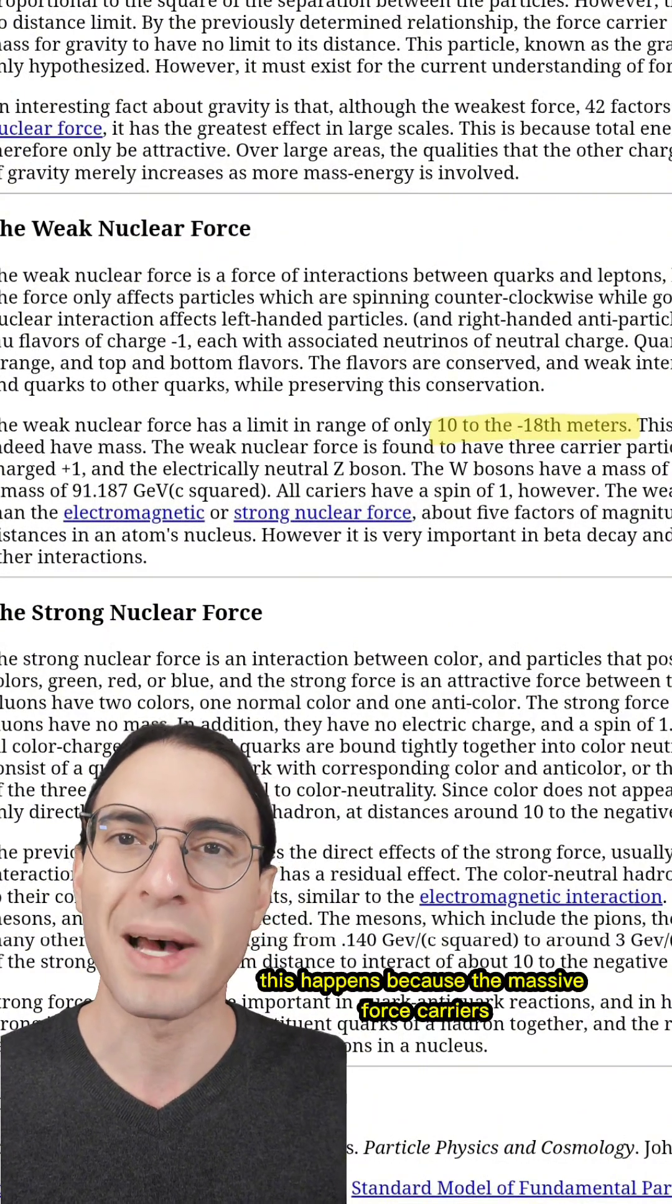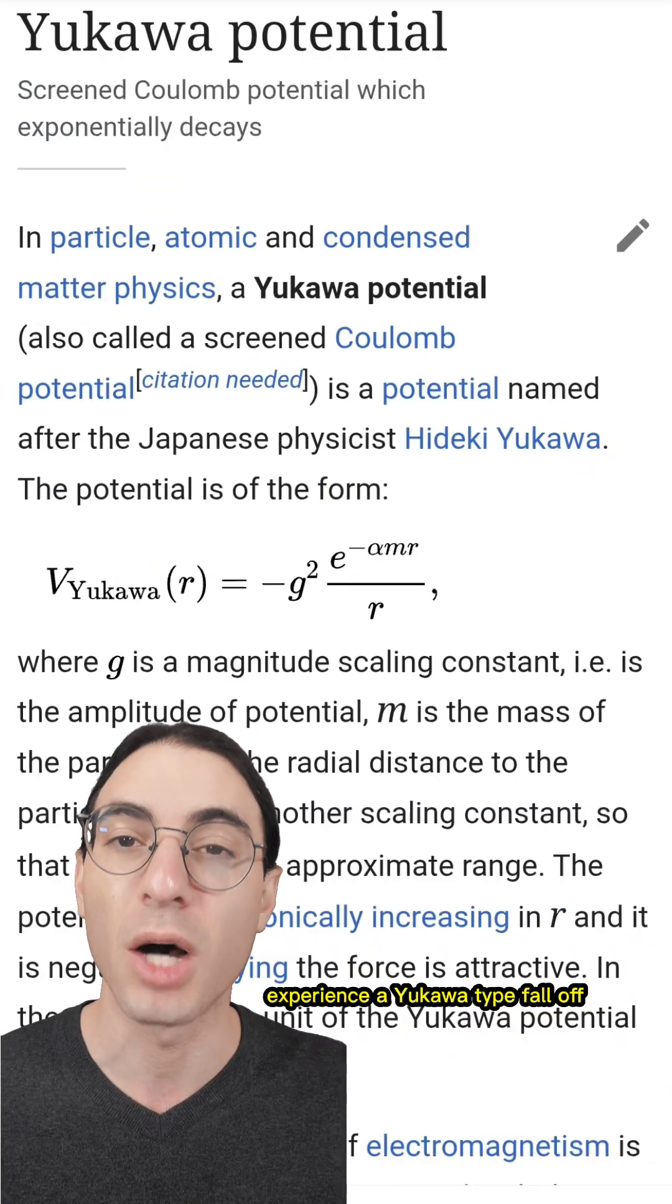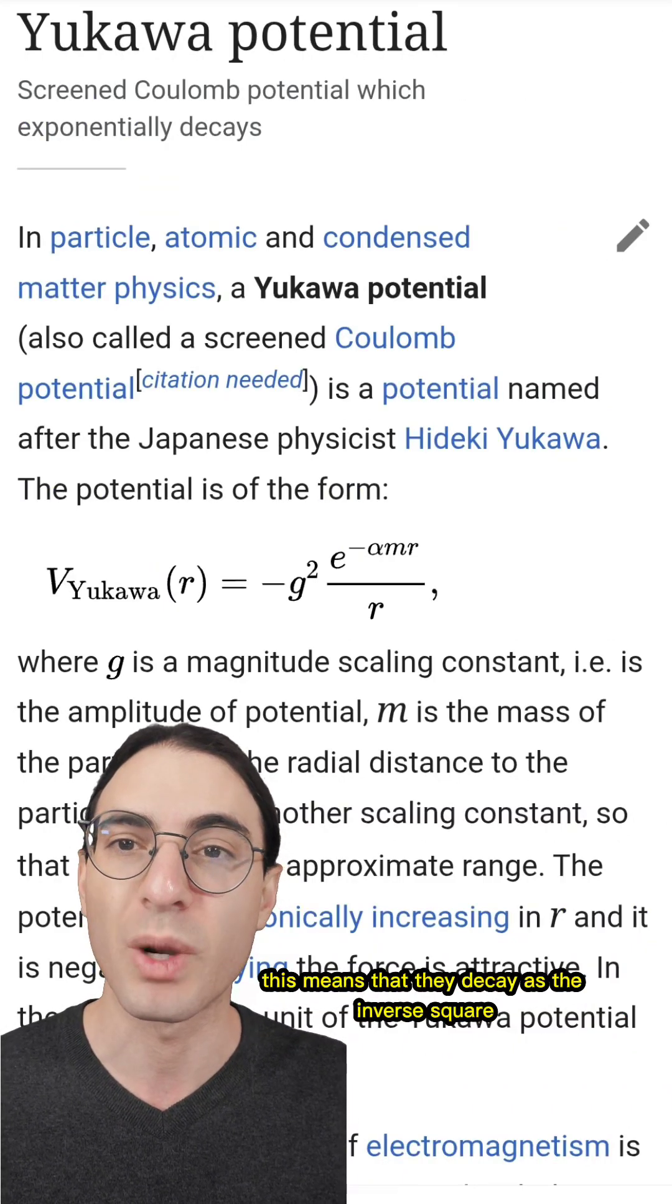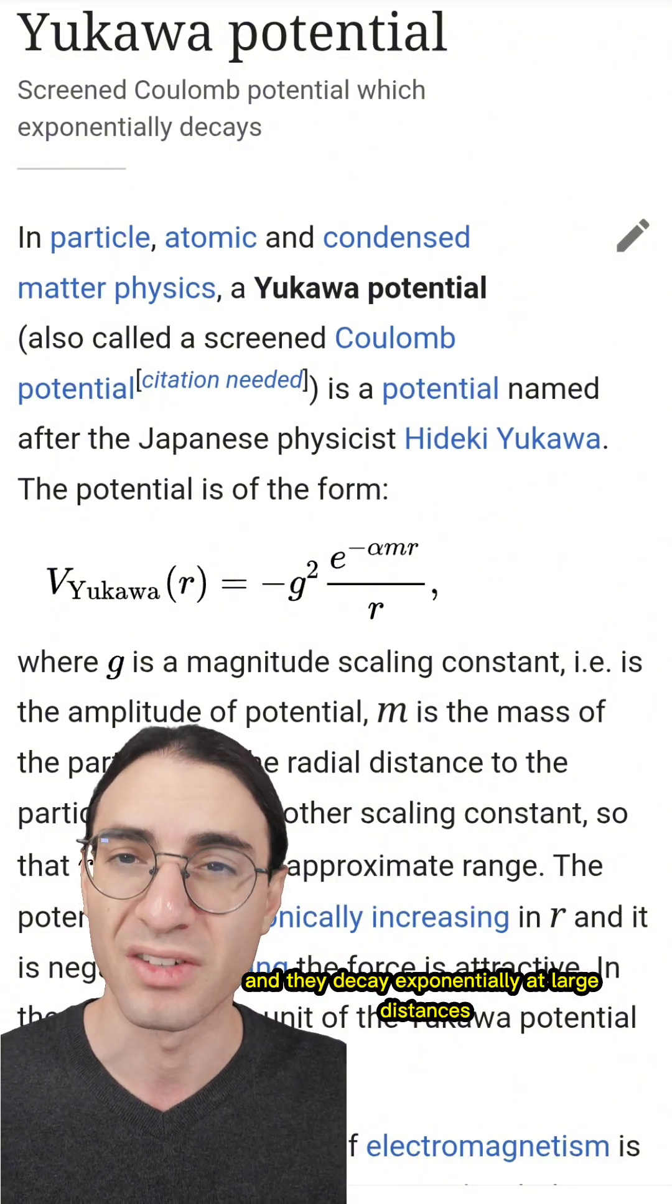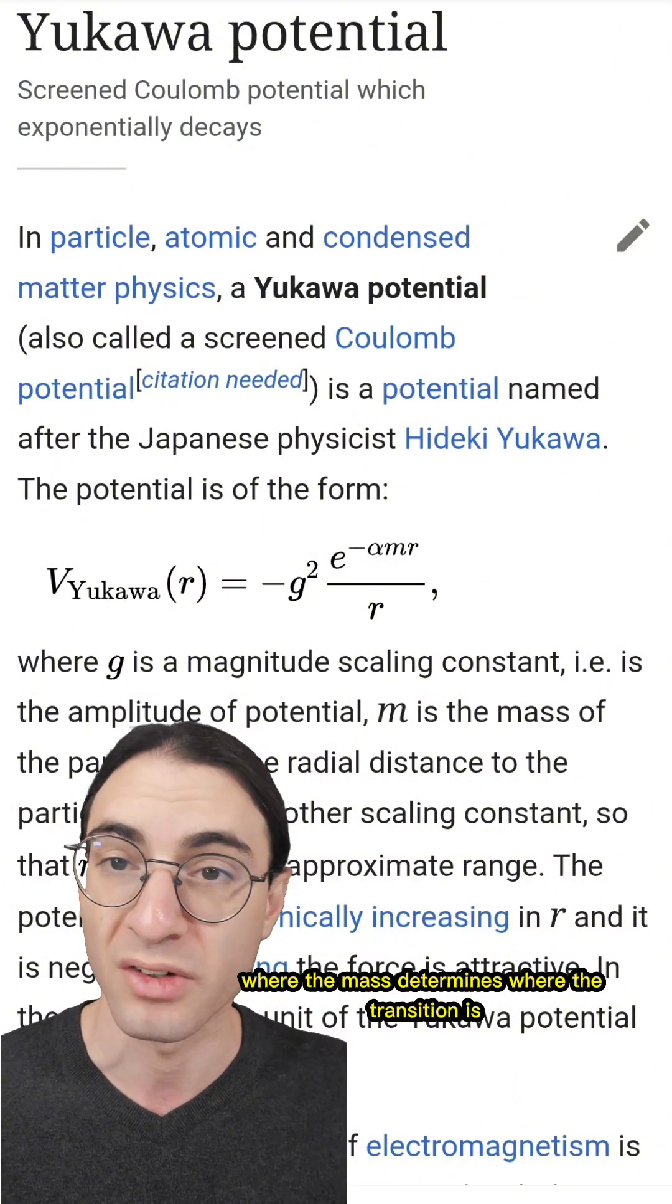This happens because the massive force carriers experience a Yukawa-type falloff. This means that they decay as the inverse square of the distance at small distances, and they decay exponentially at large distances, where the mass determines where the transition is.